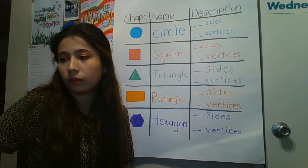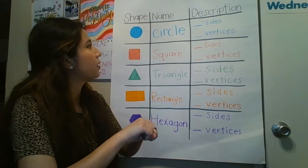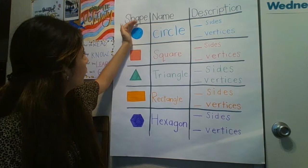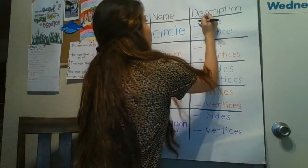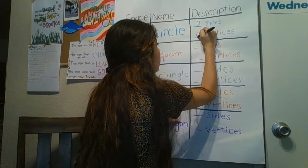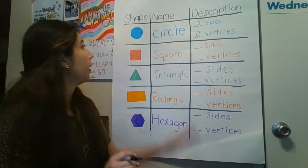How many sides does a circle have? Do you guys see any sides? I don't. All I see is a curve — a curve means that it's round. I don't see any sides, so I want to put a zero right there. Now it's asking for vertices. How many vertices do you guys see in a circle? I don't see any, so I'm going to write zero. A circle has zero sides and zero vertices, but it does have a curve.